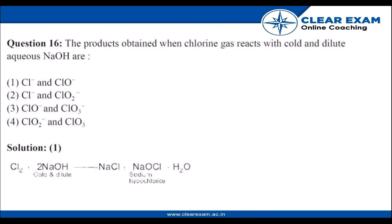Hello everybody, today we are going to try this chemistry IIT mains question that says the products obtained when chlorine gas reacts with cold and dilute aqueous NaOH are. So generally as we know two moles of NaOH react.